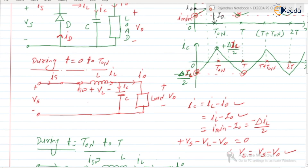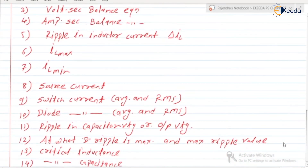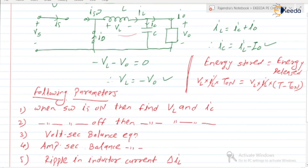In this video we discussed the basic operation of the buck converter: how IL, I0, and IC behave; the inductor voltage during ON and OFF states (VS − V0 and −V0 respectively); and the capacitor current in both states. In the next video we will derive some of these 14 parameters. Thank you.